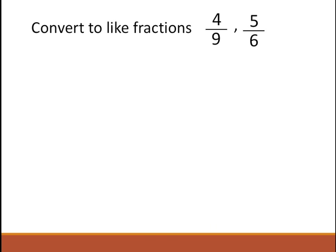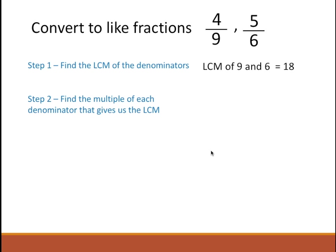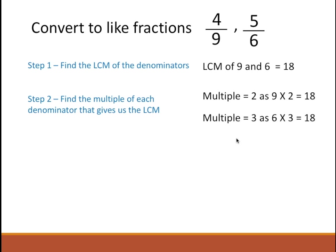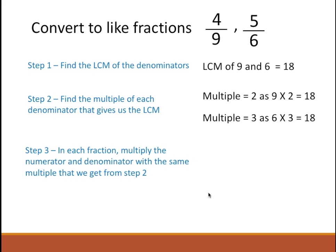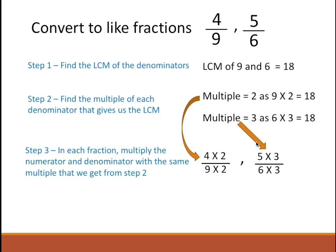Let's look at another example. We want to convert 4 by 9 and 5 by 6 to like fractions. First, we find the LCM of the denominators, which is 18. In step 2, we find the multiple of each denominator that gives us the LCM — for 9 it's 9 times 2 is 18, and for 6 it is 6 times 3 is 18. So since the multiple is 2, I multiply 4 and 9 by 2, and since the multiple is 3, I multiply 5 and 6 by 3. I get 8 by 18 and 15 by 18.